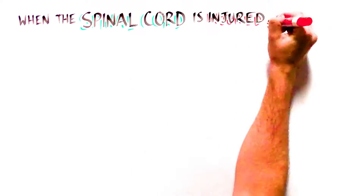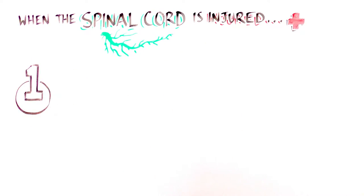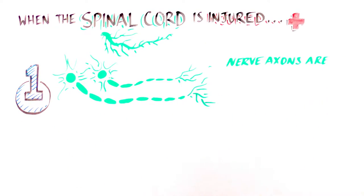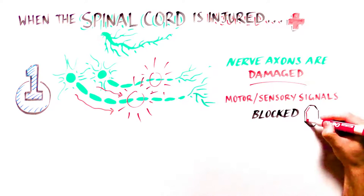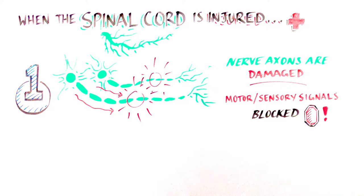When the spinal cord is injured, two things can happen. One, the nerve axons can get damaged, blocking the nerves from sending important motor and sensory signals.